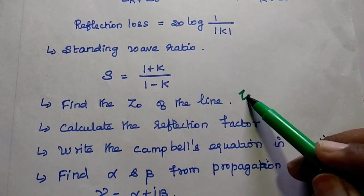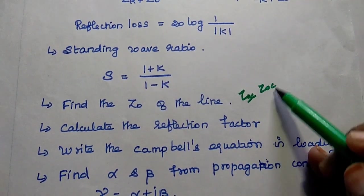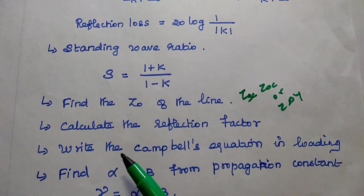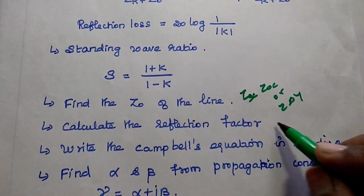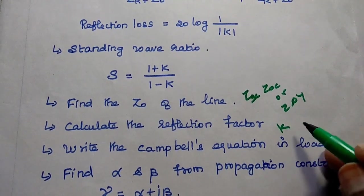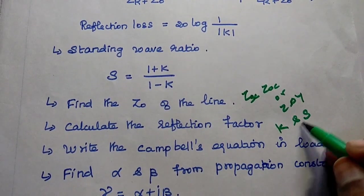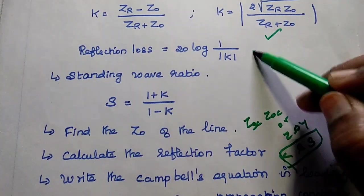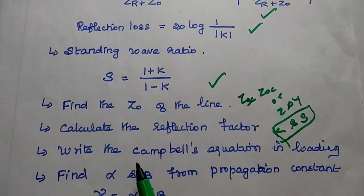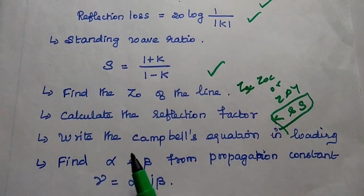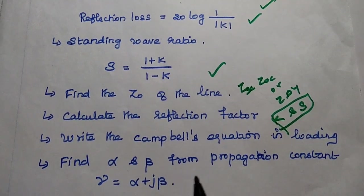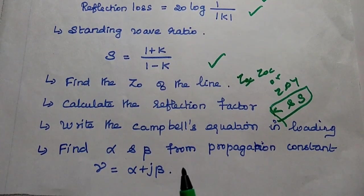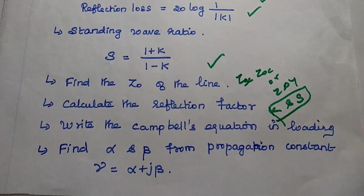They have given us either Z_SC and Z_OC, or Z and Y. Then calculate the reflection factor K, and find out the standing wave ratio. These formulas are very important to solve problems. Also write Hamble's equation in the loading concept, and find out the attenuation constant and phase shift constant from the propagation constant.